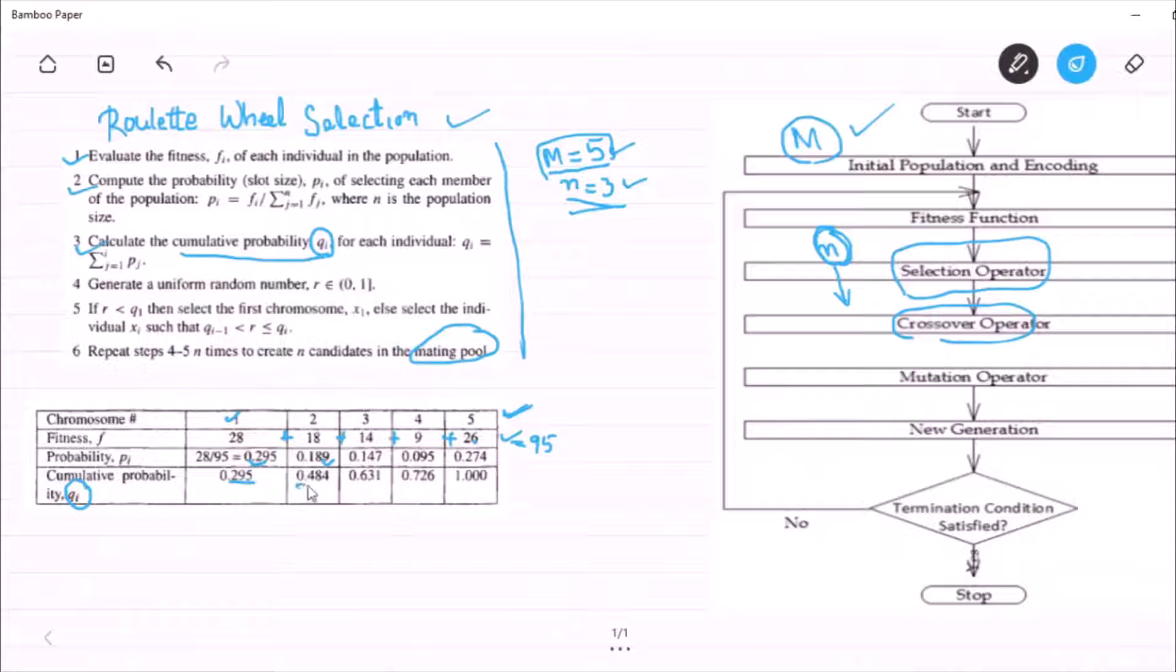Now, the cumulative probability of chromosome 2 is 0.295 plus 0.189. Similarly, the cumulative probability of individual 3 is nothing but 0.484 plus 0.147.